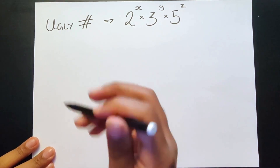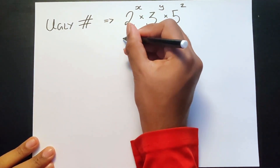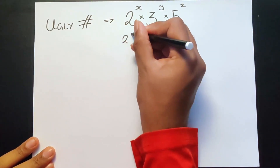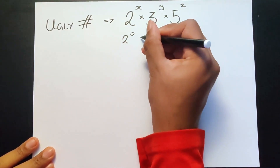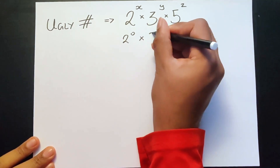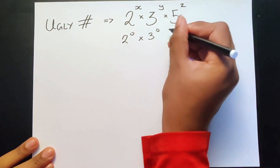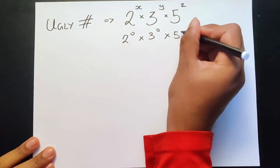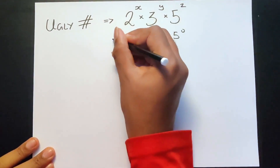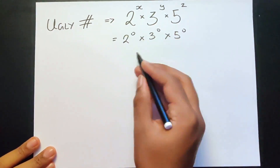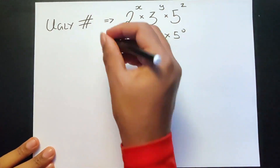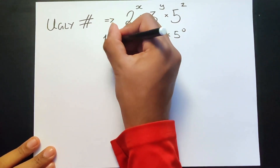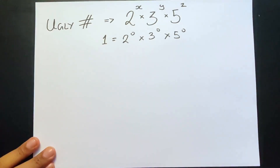So our smallest ugly number is going to be 2 to the power of 0, multiplied by 3 to the power of 0, multiplied by 5 to the power of 0. That equals 1 times 1 times 1, which is 1.